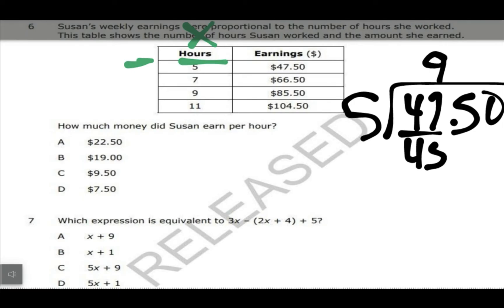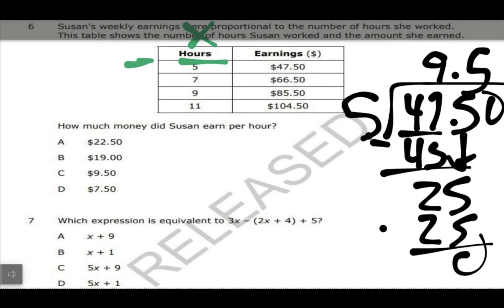So five goes into 47.9 times, it's 45. Subtracted, I get two, bring down my five. Five goes into 25 five times, and then that goes in 25, which is zero. And that just makes that a zero, so it's 9.50. So that would be C.